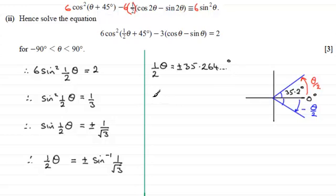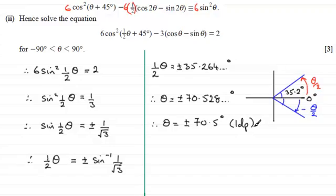So to get θ, all I've got to do is multiply both sides by 2, and that gives me θ equals plus or minus 70.528 and so on degrees. And if I give these to, say, one decimal place, it means that θ must equal plus or minus 70.5°, and that's to one decimal place.